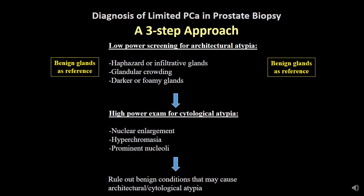In a previous video — a dummy's guide to prostate cancer diagnosis — I emphasized a three-step approach towards prostate cancer diagnosis. In this three-step approach, if a particular lesion shows architectural and cytological atypia, then the last step is to rule out various benign mimickers known to give architectural and cytological atypia. I want to emphasize that this is an integrated three-step approach; we are not going to look at one step in isolation.